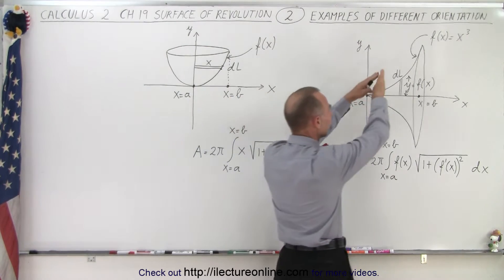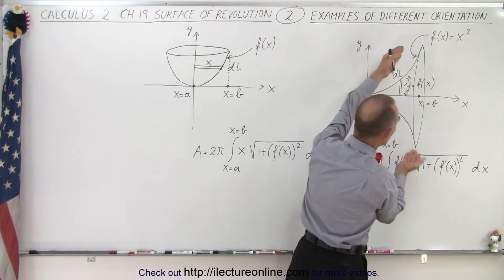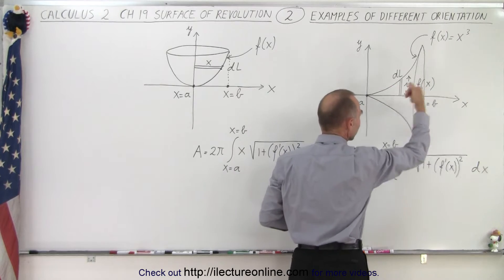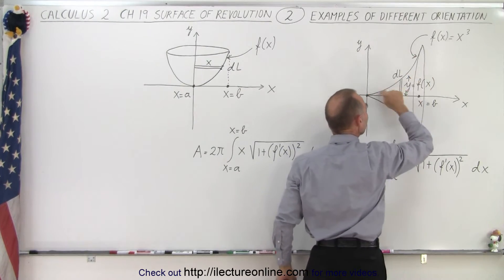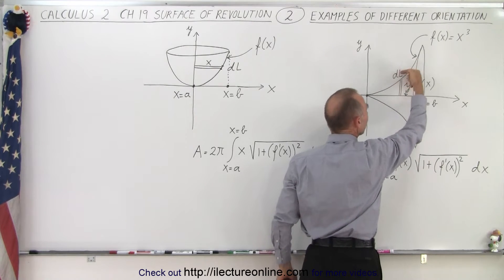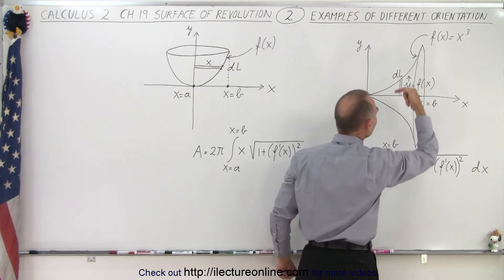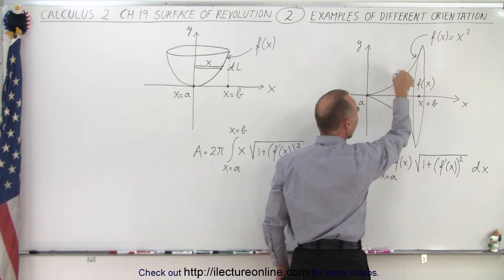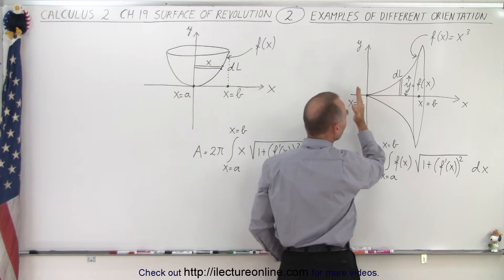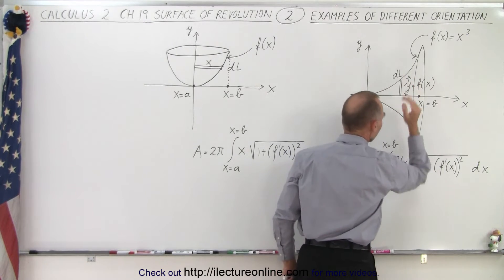So here to find the area of revolution of this widening cone, which is symmetric about the x-axis, we have the function of x along the edge. We have a small little dL segment. We then wrap that around the x-axis. We form a small little dA that is on the surface of this cone, and then we integrate from x equals a to x equals b.